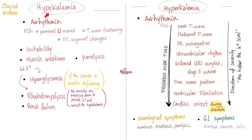Sodium problems equal CNS problems, but potassium problems equal cardiac problems. Whether hypokalemia or hyperkalemia, arrhythmia can happen and shows up on the EKG. For hypokalemia, memorize prominent U waves on EKG. For hyperkalemia, memorize the peaked T wave. As hyperkalemia gets worse, it progresses from peaked T wave to wide QRS, sine wave pattern, ventricular fibrillation, and cardiac arrest. The heart can stop during diastole with hypokalemia, but hyperkalemia can stop the heart during systole.